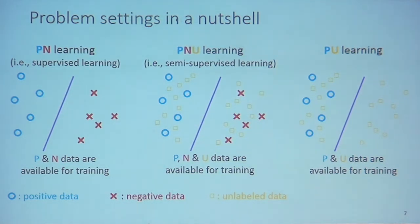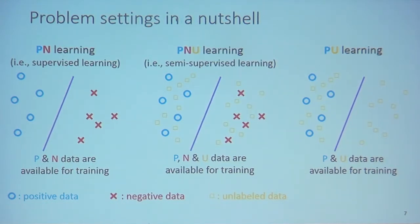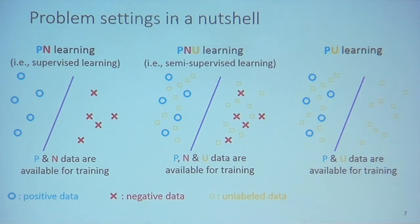The first setting is PN learning, which is supervised learning. We call it PN learning because we assume we draw positive data and negative data separately from two class-conditional densities. We also have PNU learning, which is simply semi-supervised learning — besides positive and negative data, we have many unlabeled data. If we remove negative data from PNU learning, we reduce it to PU learning.